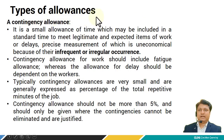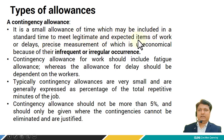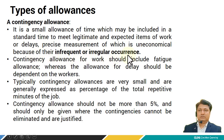Now let's see the various types of allowances. First is the contingency allowance. It is a small allowance of time which may be included in the standard time to meet legitimate and expected items of work or delays, the precise measurement of which is uneconomical because of their infrequent or irregular occurrences.